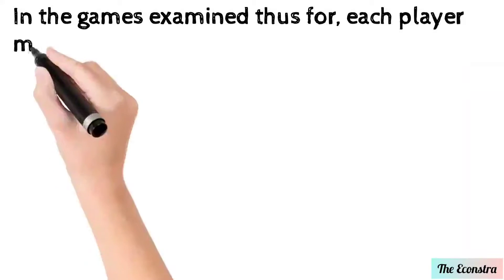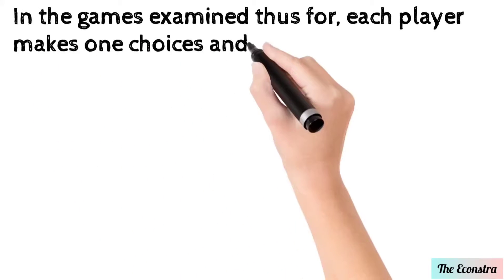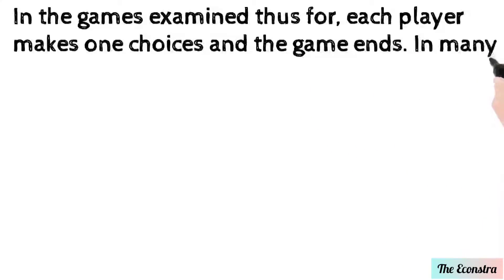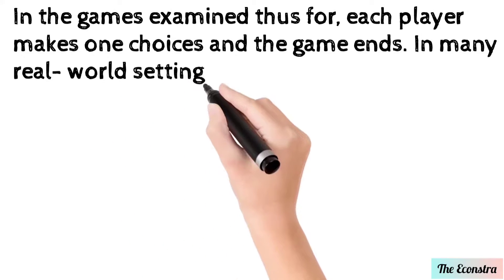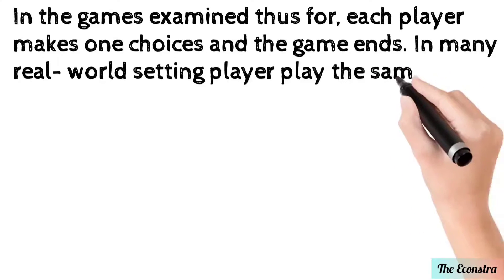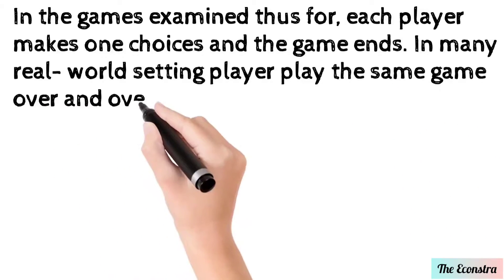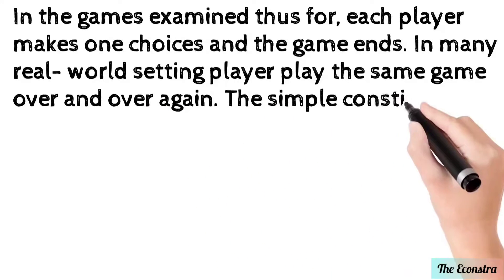In many real-world settings, players play the same game over and over again. The simple constituent game that is played repeatedly is called the stage game. As we observe with the prisoner's dilemma, the equilibrium in one play of the stage game may be worse for all players than some other more cooperative outcomes.